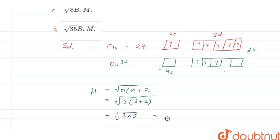So, by solving this, we can get the value that is under root 3 into 5, that is under root 15. That is under root 15 BM. That is the magnetic moment value for the chromium 3 plus.